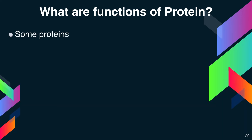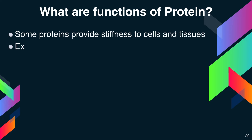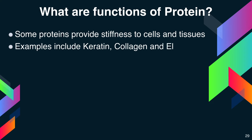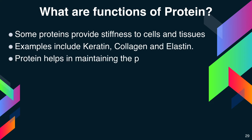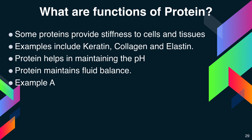Some proteins provide stiffness to cells and tissues. Examples include keratin, collagen, and elastin. Proteins also serve in maintaining the pH of your body and are accessible for maintaining fluid balance. Albumin and globulin are proteins that help maintain your body's fluid balance by attracting and retaining water.